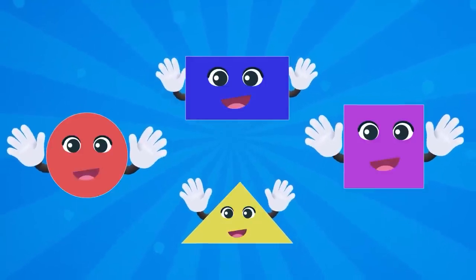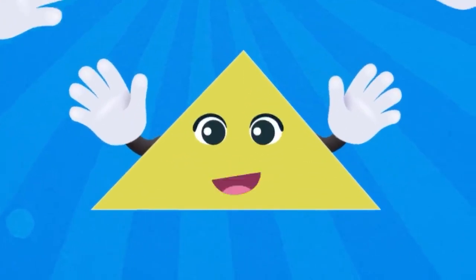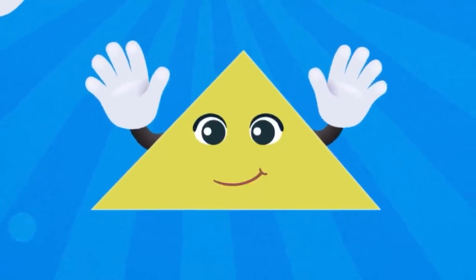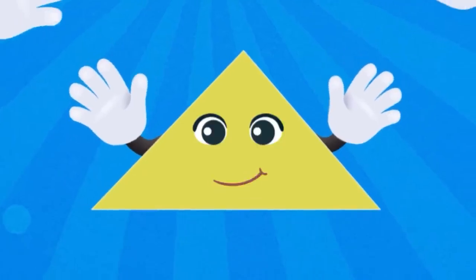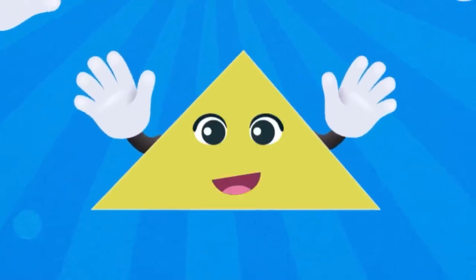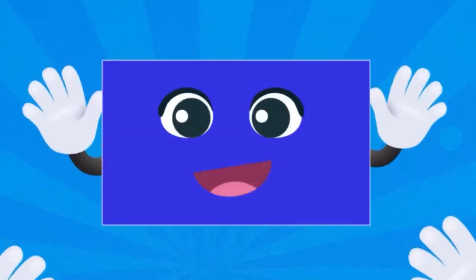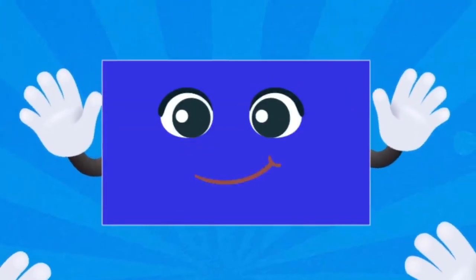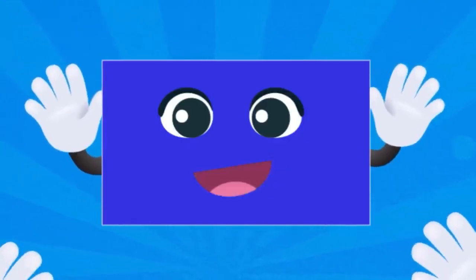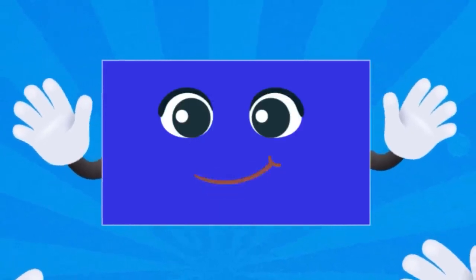Then came triangle, pointy and neat, with little sides and dancing feet. She climbed the hills and flew a kite, a superhero shape taking flight. Rectangle, oval, stars so bright, shining shapes in the morning light. So many friends, so much fun. Our shape adventures just begun.